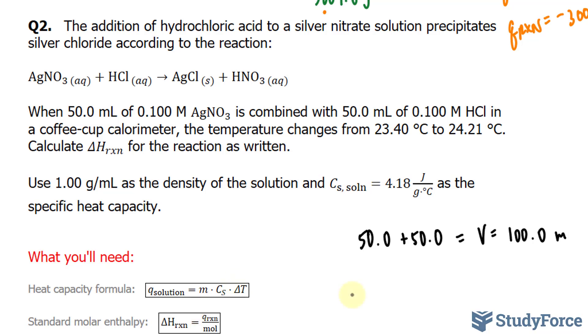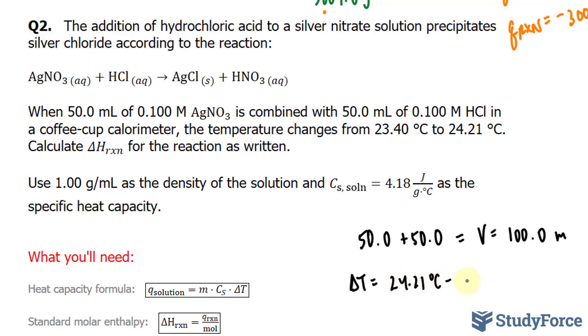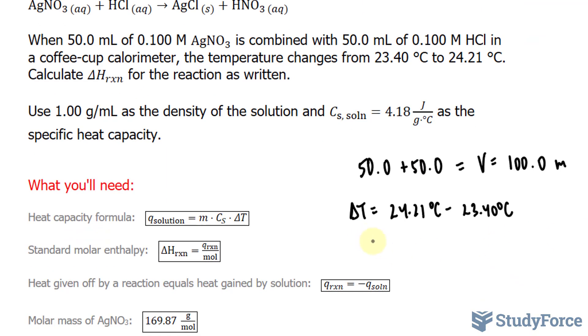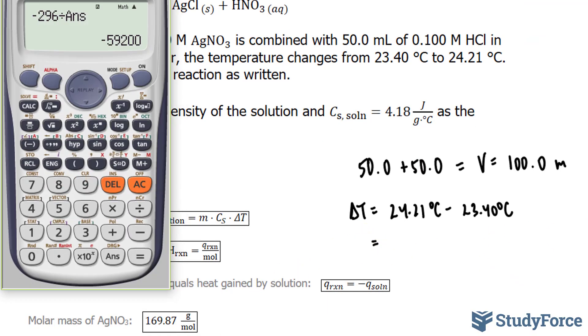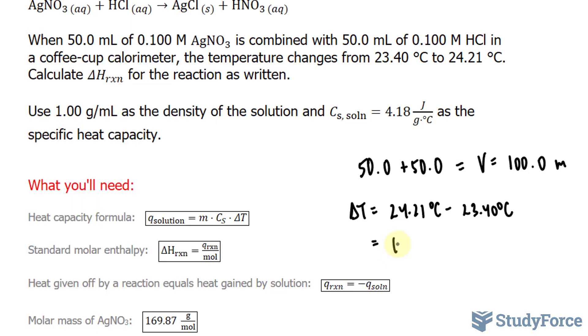The formula wants the mass of the solution times the specific heat capacity times delta T. We can find delta T by taking the end temperature and subtracting the initial: 24.21 degrees Celsius minus 23.4 degrees Celsius. Using our calculator, this gives us 0.81 degrees Celsius as our difference.